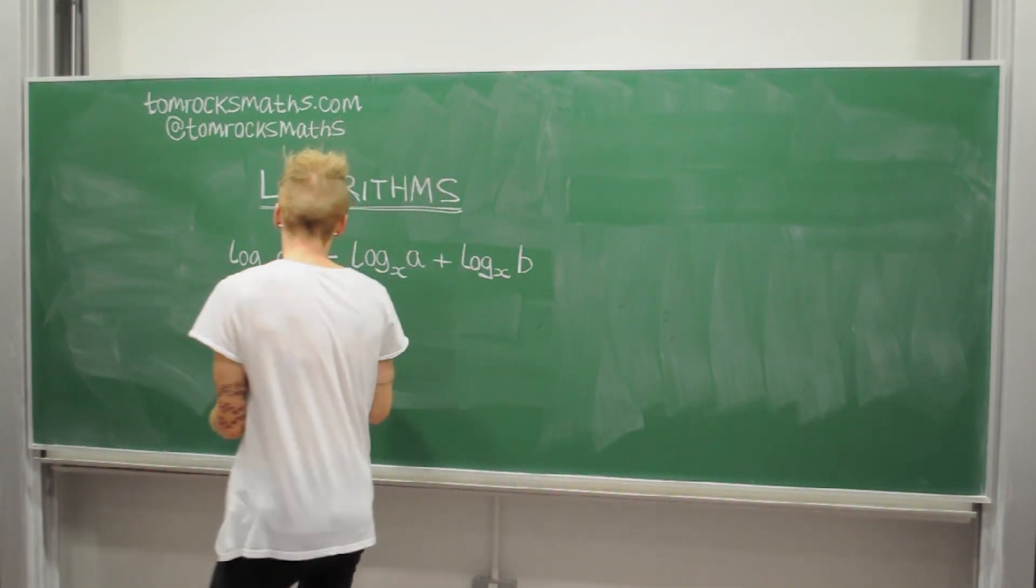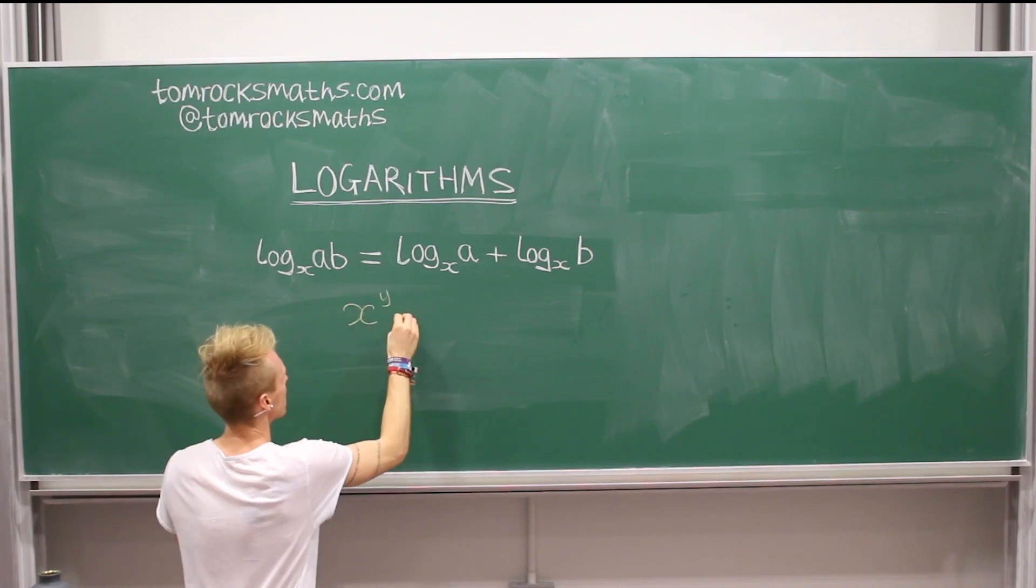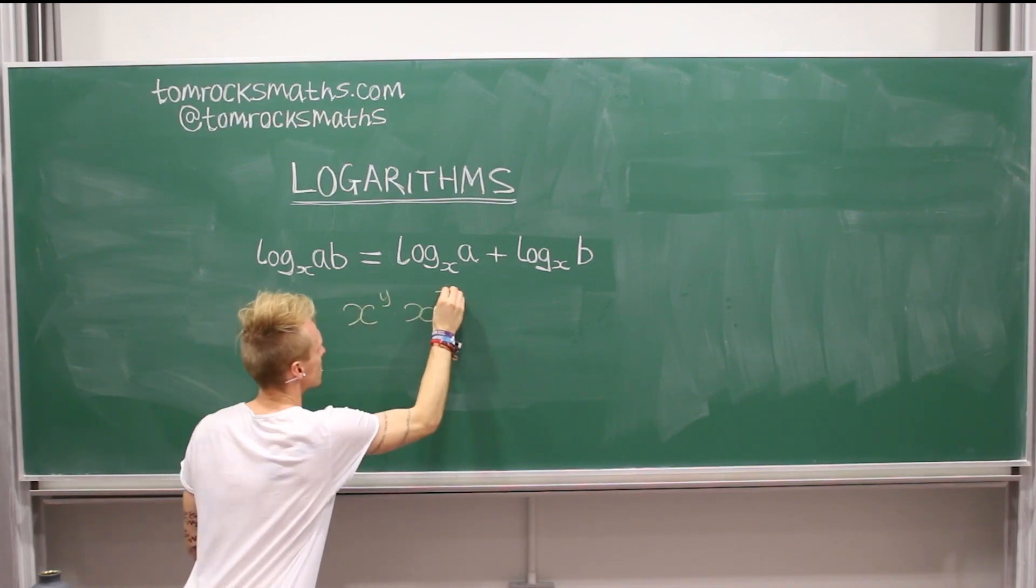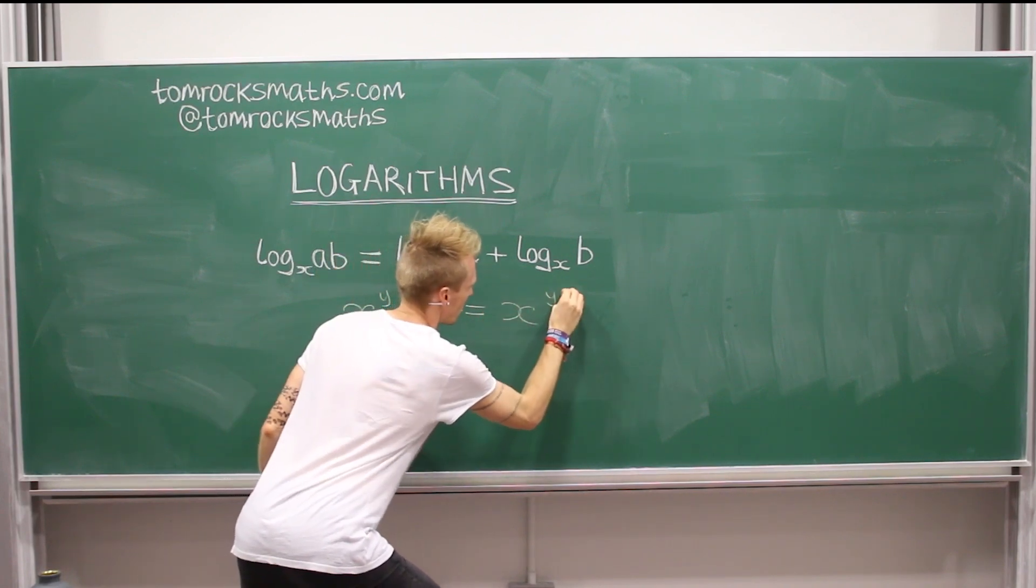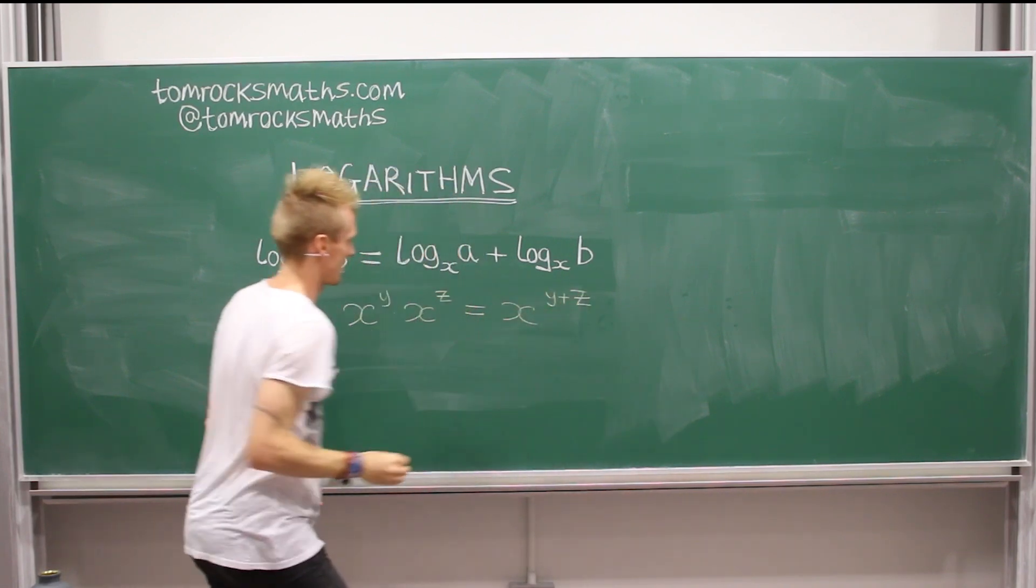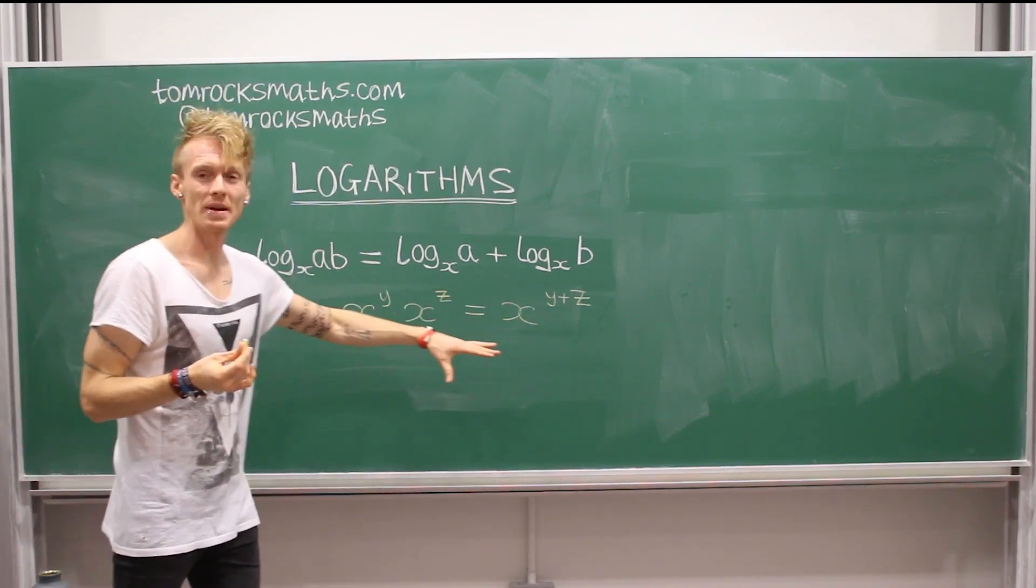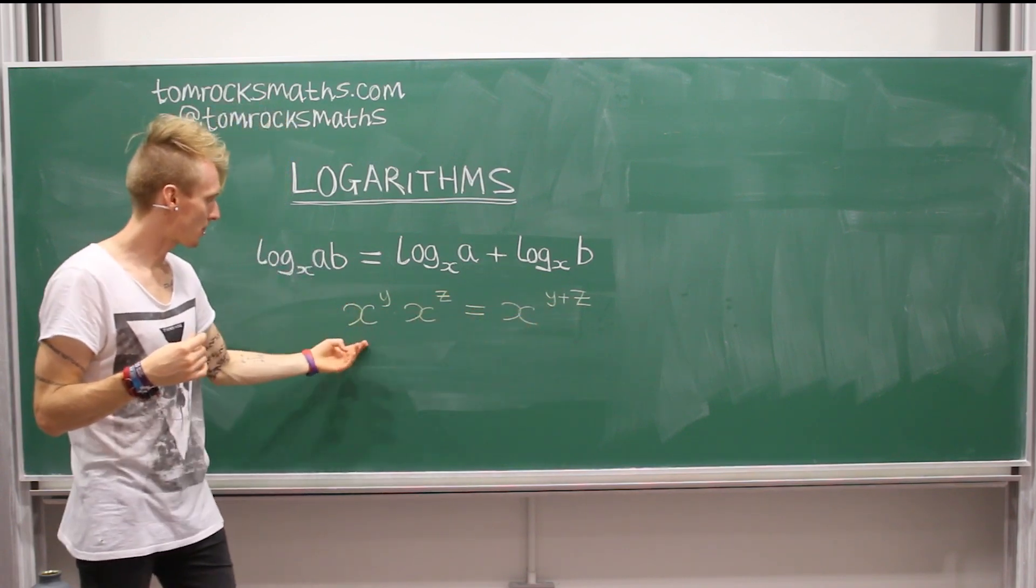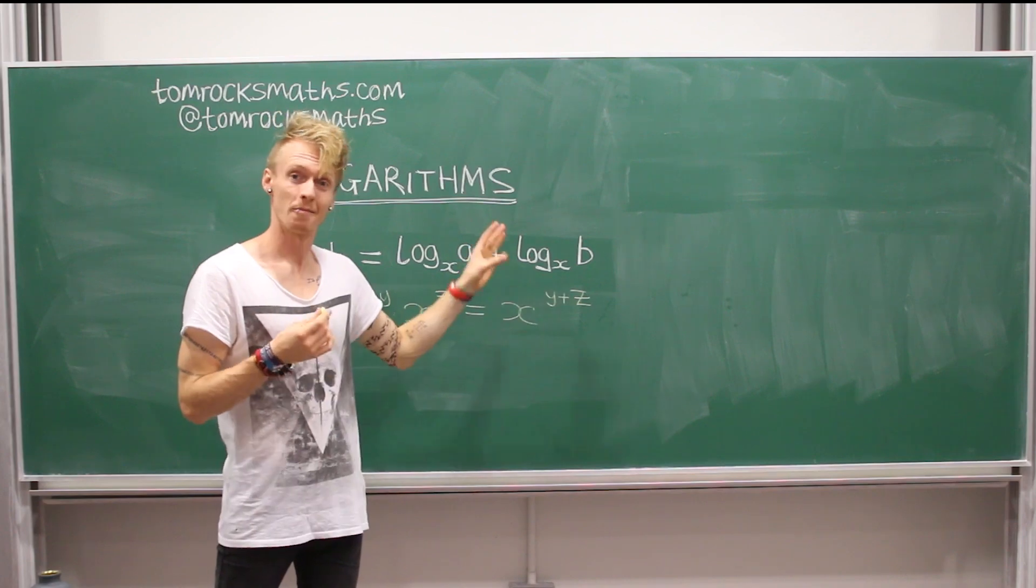And taking what we've just learnt and writing the law in the most general algebraic form possible, what we've basically been doing is using the idea that x to the power y times x to the power z is just equal to x to the y plus z. That's all there is to it.